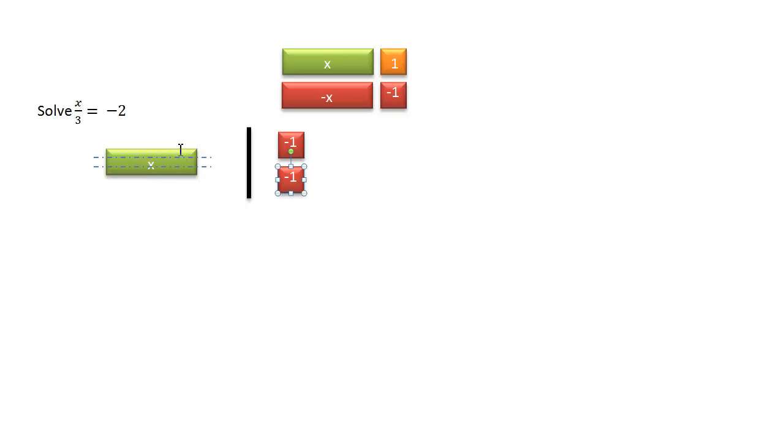So if we want to not have x split into three equal parts, then we're going to have to make, to get a positive 1x, we're going to have to triple the number of tiles on this side. So if we make an additional copy of these, that eliminates one of the division bars. And then if we make another copy of them, that will eliminate the second one. So now a positive 1x is equal to a total of a negative 6.